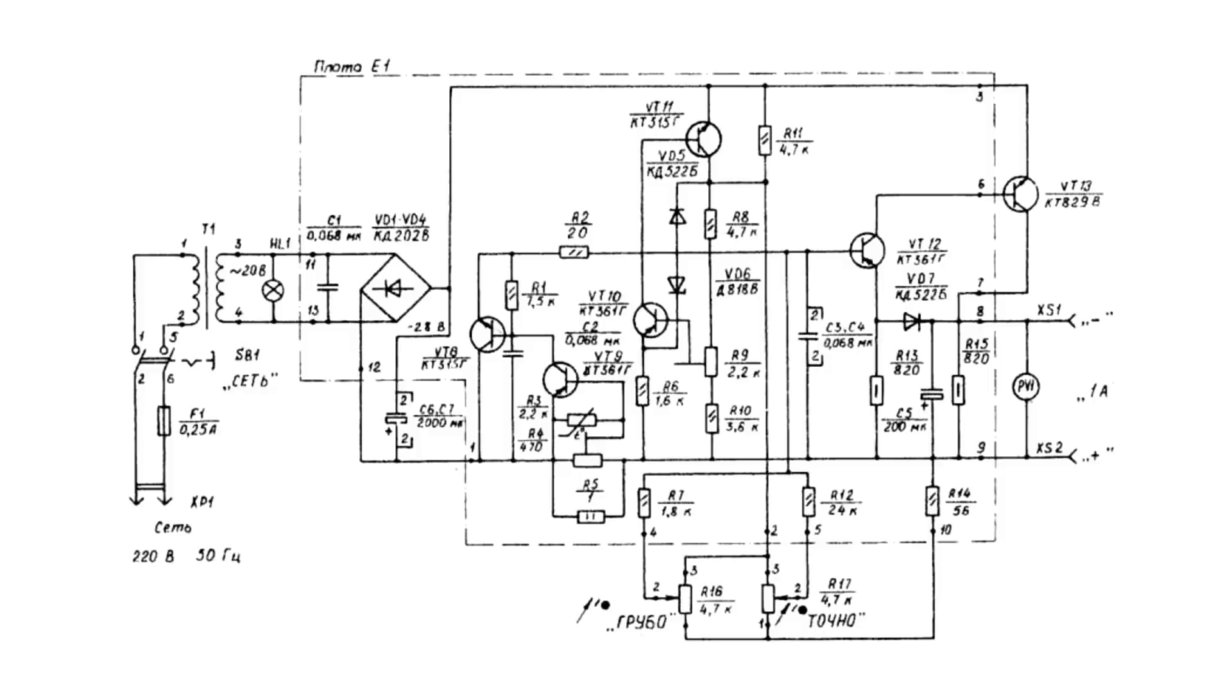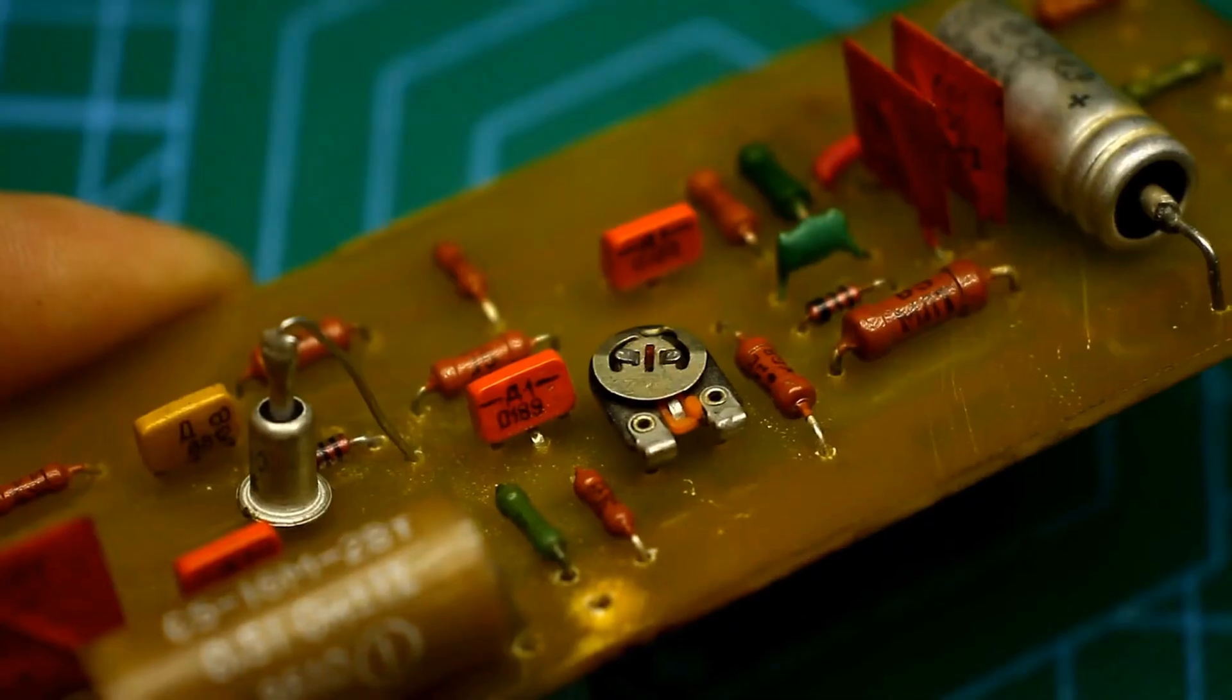The original circuit is designed for an output voltage from 0 to 15 volts and a current up to 1.2A. And believe me, this will be enough for most tasks. But the power of the circuit can be increased by replacing the power transistor and reducing the resistance of the current sensor. The second trimmer resistor will allow you to set the upper limit of the output voltage.